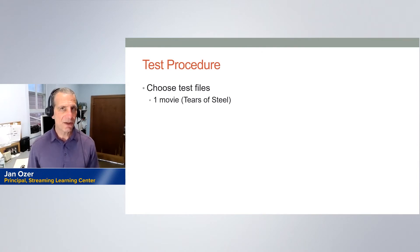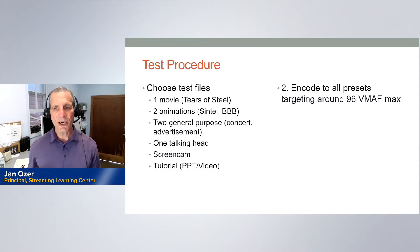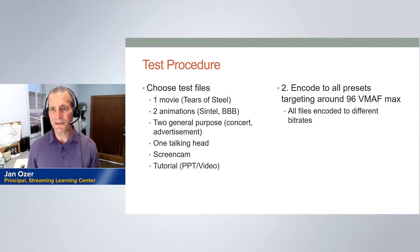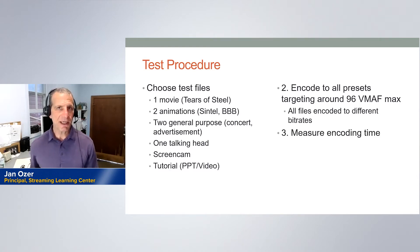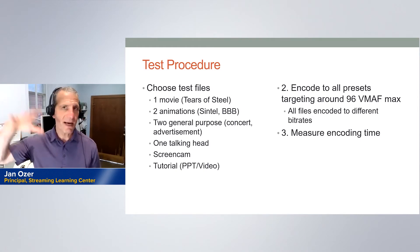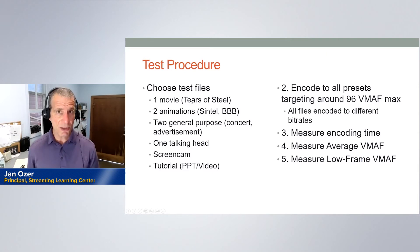You choose your test file — I looked at test files in the context of the book I wrote — then encode at different presets targeting around 96 VMAF points, which is the effective zone where most people encode their files. That means each file is encoded at a different bit rate, customized to hit 93–95 VMAF. I measure encoding time, average VMAF, and low frame VMAF, which is the lowest quality frame in the encode.